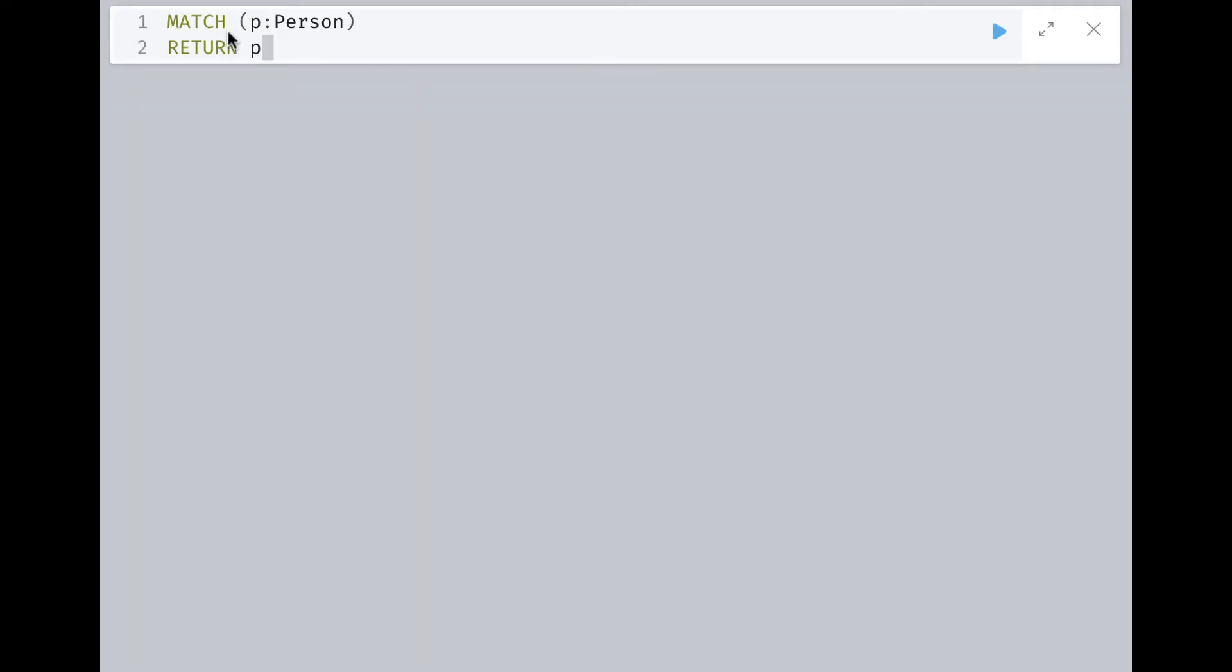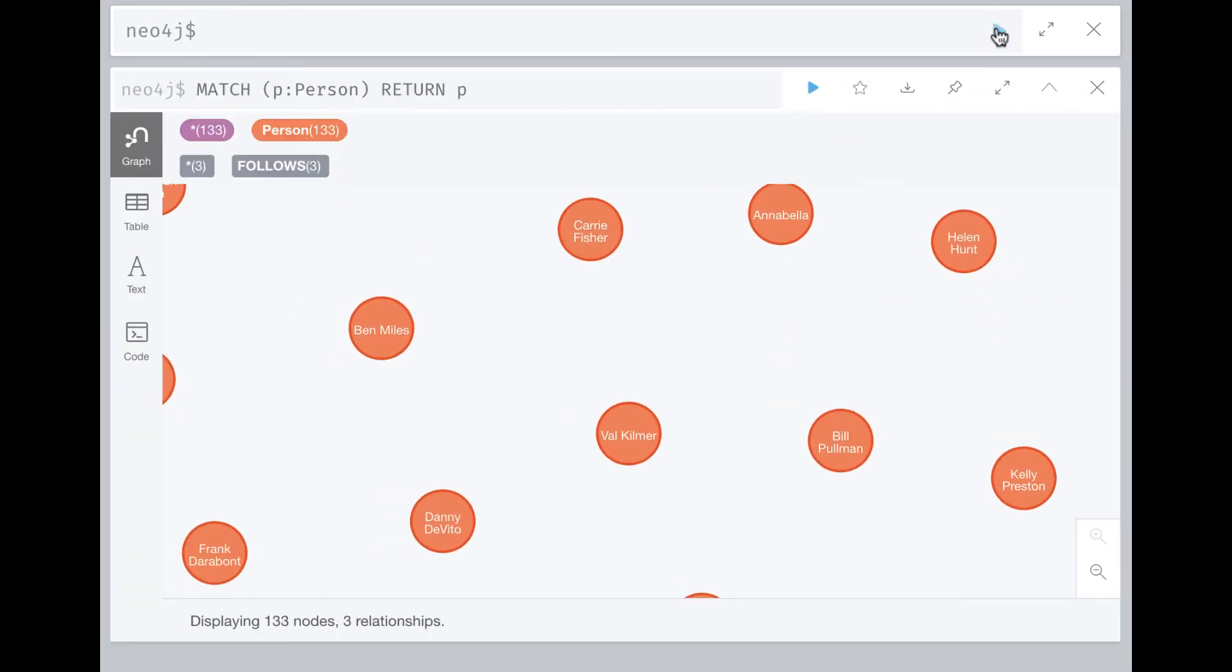Let's take a look at node retrieval in action. Here is a simple node retrieval example. We want to retrieve all person nodes from the graph. A match clause must return something, so we return all nodes retrieved. We use the p variable to hold the nodes retrieved.